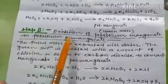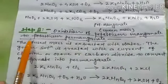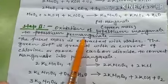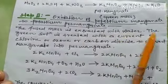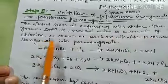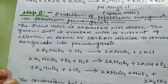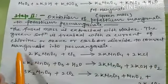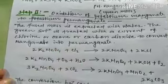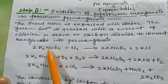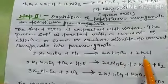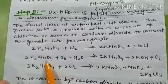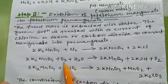In the second step, oxidation of potassium manganate to potassium permanganate takes place. The fused mass is extracted with water. The green solution is treated with a current of chlorine, or ozone, or carbon dioxide to convert manganate into permanganate. When the green solution is passed through a current of chlorine, potassium permanganate is formed along with potassium chloride. When potassium manganate is passed through a current of ozone, potassium permanganate, potassium hydroxide, and oxygen are formed.